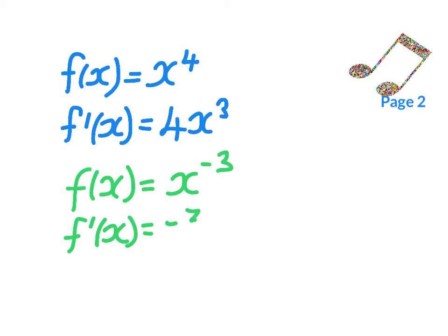so it's negative 3 times x to the power of, we're reducing by 1, negative 4.